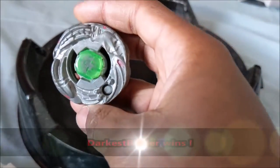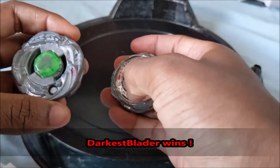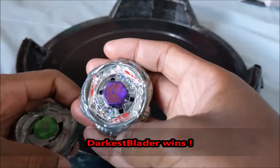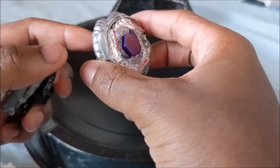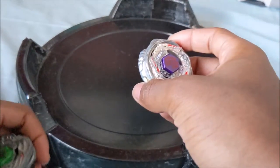Darkest Blader takes round number three and wins the entire set 3-0. Very cool combo. I really like what you did. 160 MF seems like an interesting combination, so props to you for using it.